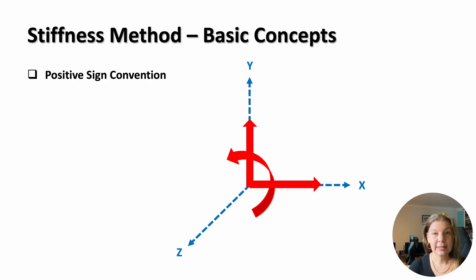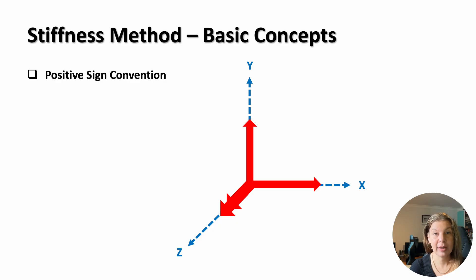First, we need a consistent sign convention. We take displacements as positive in the global x and y directions and rotations, which are anti-clockwise, as positive. Similarly, nodal forces and moments are positive when they act in these same directions. The stiffness matrix is built on these assumptions and keeping the convention consistent is essential when we assemble the contributions from each part of the structure. We can also represent the moment like this using two arrows.